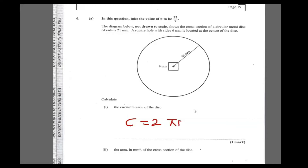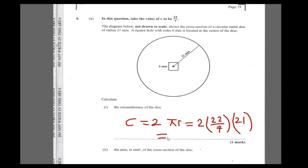With r = 21 and π = 22/7, the circumference is 2 × (22/7) × 21. That works out to be 132 millimeters, which is the perimeter or circumference of the disc.